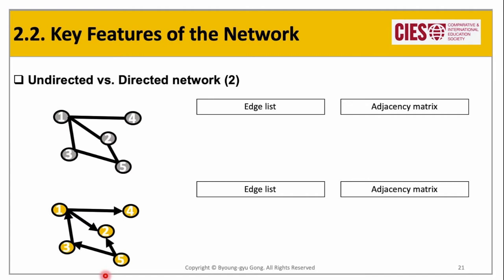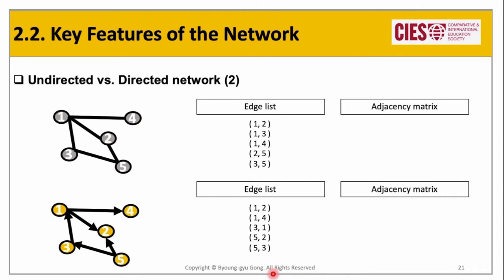Okay, let's check the answers, starting with the edge list. Did you recognize the difference between the directed and undirected network? In the edge list of the undirected network, the pair of vertices does not indicate any directionality — for instance, (1,2) does not entail that information flows from 1 to 2; it just indicates there is a connection. But in the edge list of the directed network, the pair of vertices entails a direction: (1,2) means information flows from 1 to 2.